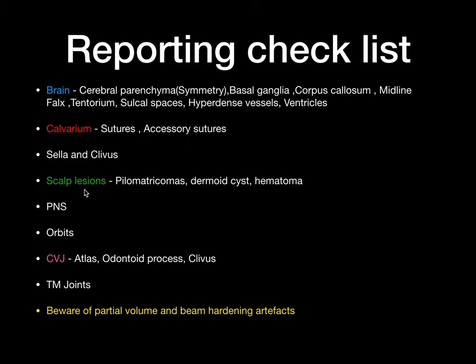Look at scalp pathology — commonly encountered are subcutaneous lipomas, pilomatricomas, dermoid cysts, and hematomas. Also assess the paranasal sinuses, orbits, craniovertebral junction, atlas, odontoid process, and clivus. Check the bilateral TMJ joints. Most importantly, beware of partial volume and beam hardening artifacts.